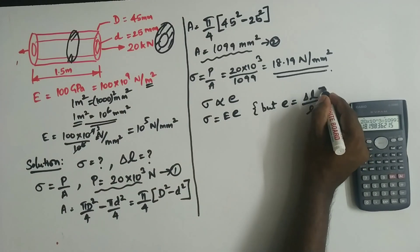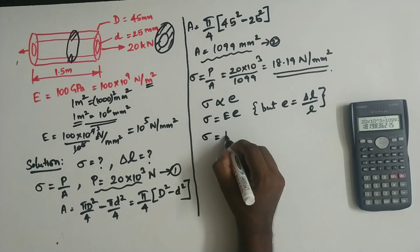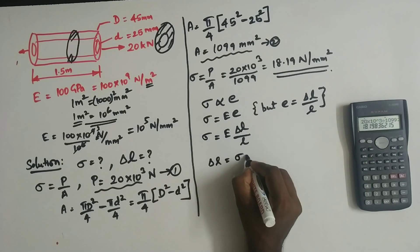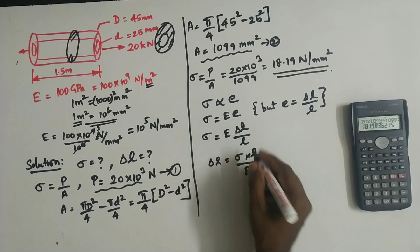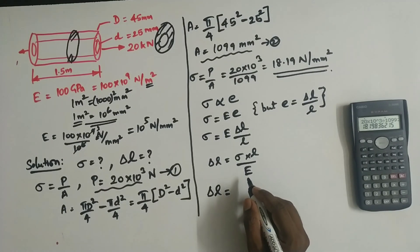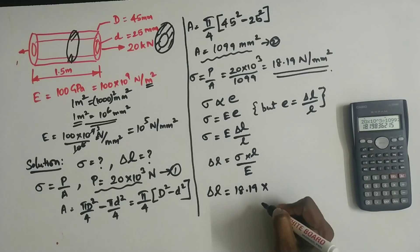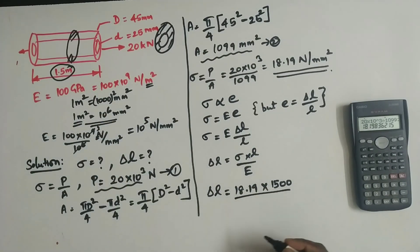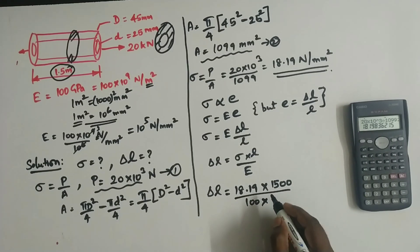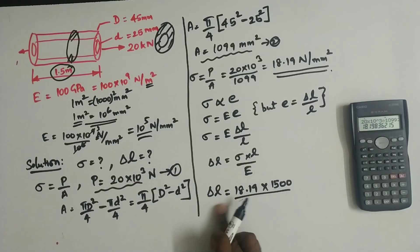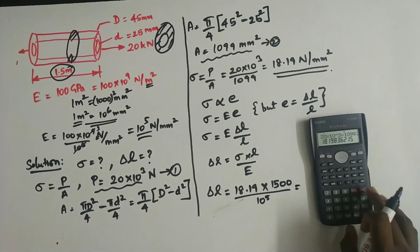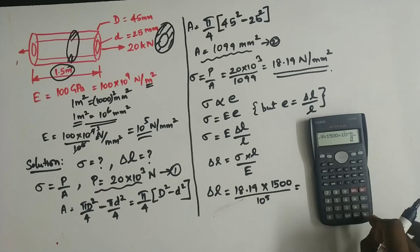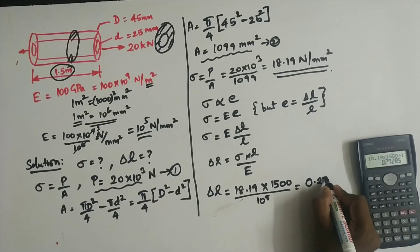Deformation is found using the strain relationship: stress equals Young's modulus times delta L by L. Rearranging, delta L equals sigma times L divided by E. Substituting values: delta L equals 18.19 into 1500 divided by 10 power 5. The change in length is 0.272 mm.